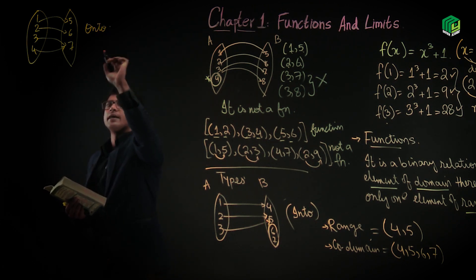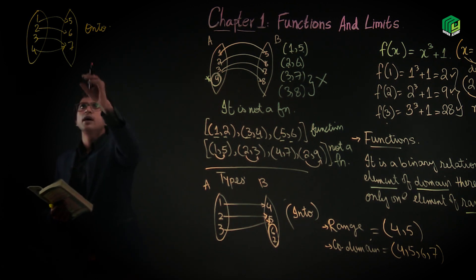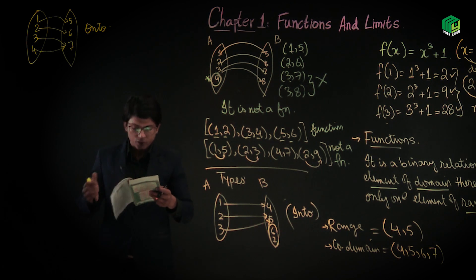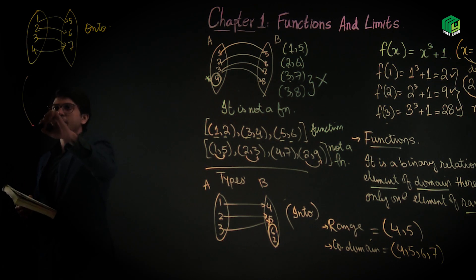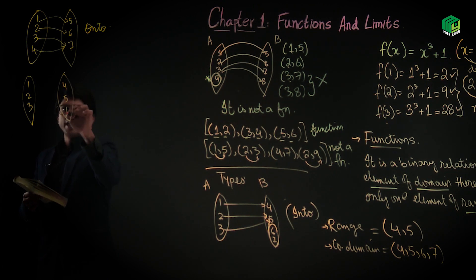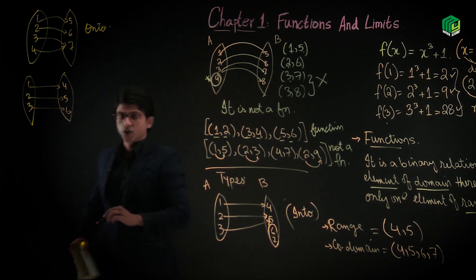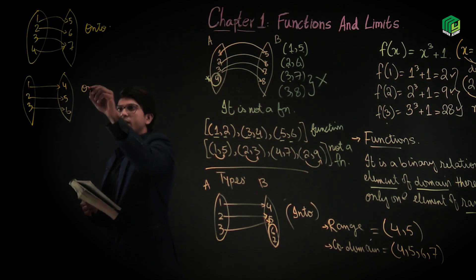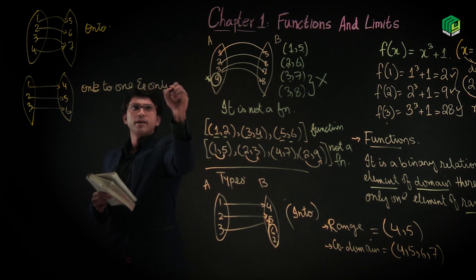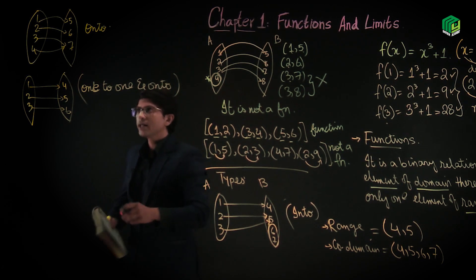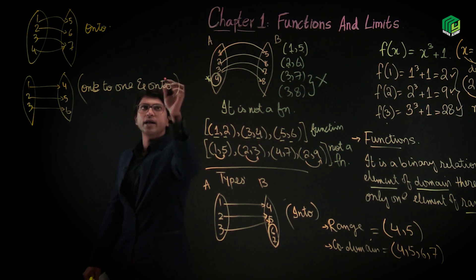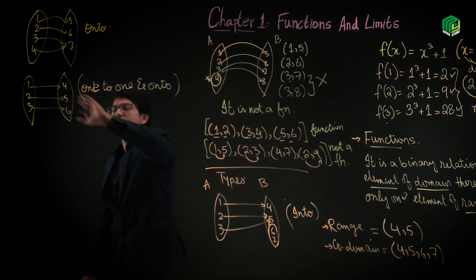اس طرح کے functions کو onto functions کہتے ہیں — یعنی set B کے تمام elements map ہو رہے ہوتے ہیں، range اور co-domain برابر ہوتا ہے۔ ایک اور قسم: set A = {1,2,3} اور set B = {4,5,6}۔ Mapping: 1→4, 2→5, 3→6۔ اس قسم کو 1-to-1 and onto function کہتے ہیں — ہر domain کی ایک ہی range ہے اور تمام elements utilized ہو گئے۔